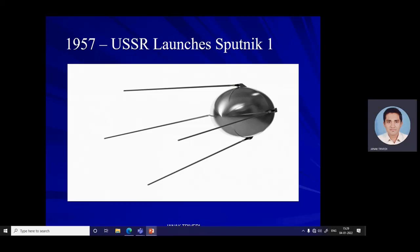Sputnik 1 orbited for three weeks on battery power, and a further two months without power, before falling back into the atmosphere. It caught the United States off guard and kicked off the space race.